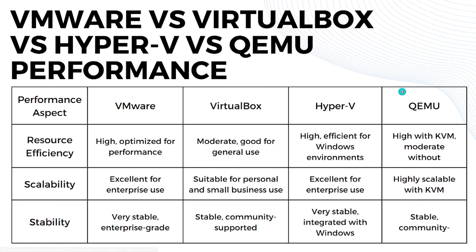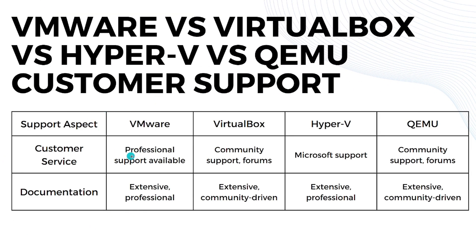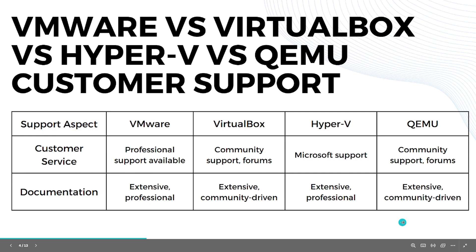Now let's look at customer support. VMware has professional support available, VirtualBox has community forums and community support, Hyper-V benefits from Microsoft support, and QEMU also has community support and forums. When it comes to documentation, all four platforms offer extensive documentation — VMware's is professional, while VirtualBox and QEMU are community-driven, and Hyper-V also provides comprehensive docs.